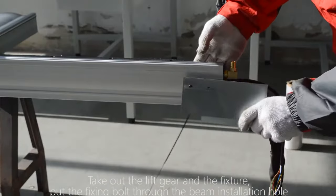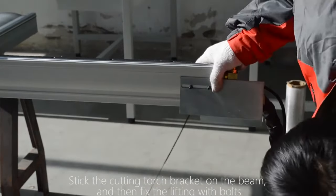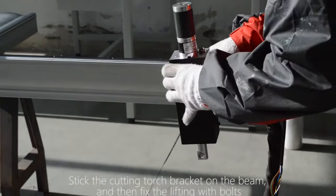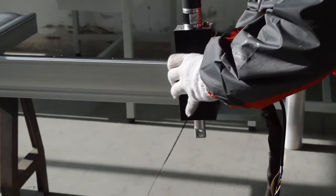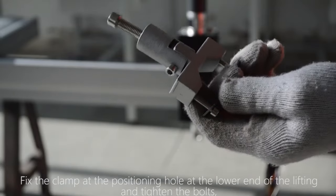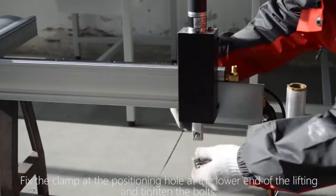Put the fixing bolt through the beam installation hole. Stick the cutting torch bracket on the beam and then fix the lifting with bolts. Fix the clamp at the positioning hole at the lower end of the lifting and tighten the bolts.